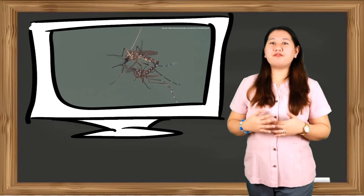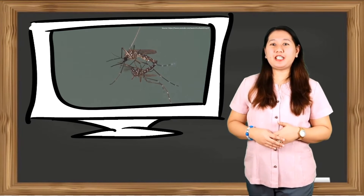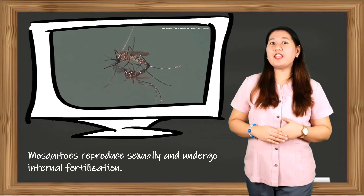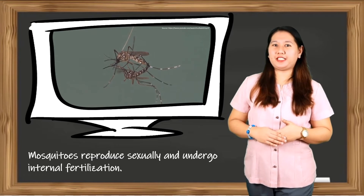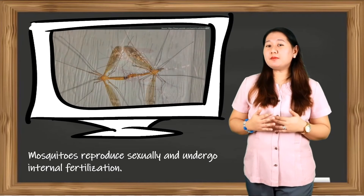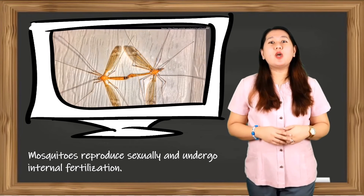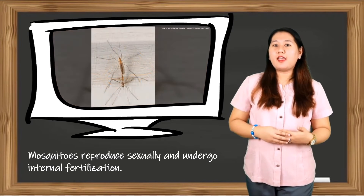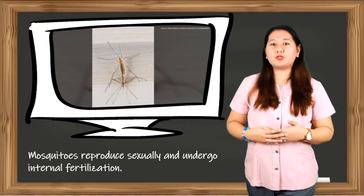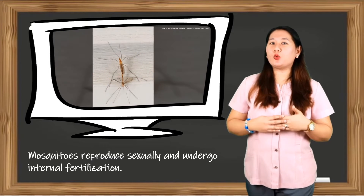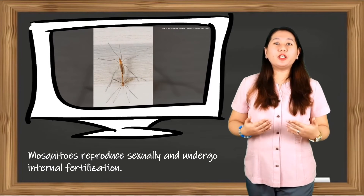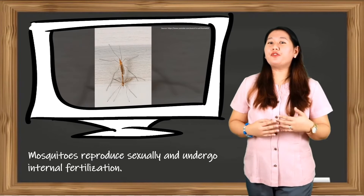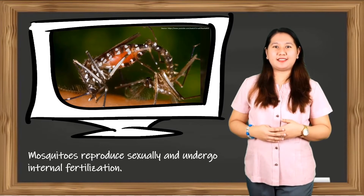As mentioned earlier, mosquitoes reproduce sexually and undergo internal fertilization. Unlike male mosquitoes, which will continue to mate until they die, most female mosquitoes will mate only once. They store sperm for the rest of their lives to fertilize large numbers of eggs.